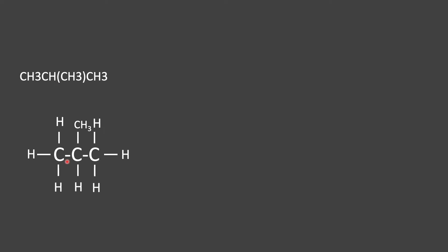Now I want to talk about brackets in naming. Here we have an organic molecule: CH3CH(CH3)CH3. Let's start to draw it. We start by drawing out the CH3, then we add a C that has an H on it. In brackets, it's telling us that we have another CH3 attached to this carbon — another methyl group, a single carbon. This methyl CH3 is attached to that second carbon in the backbone.